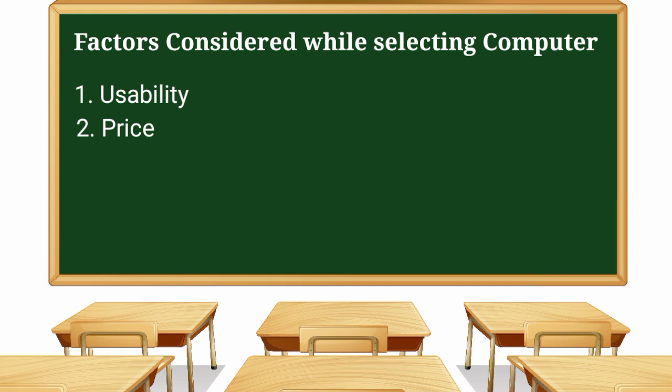The next point is the type of operating system. We should select the OS based on minimum requirements. For example, Linux OS has limitations — there are things you cannot do in Linux. Windows is considered a better and more stable OS, so that is why many people choose Windows.